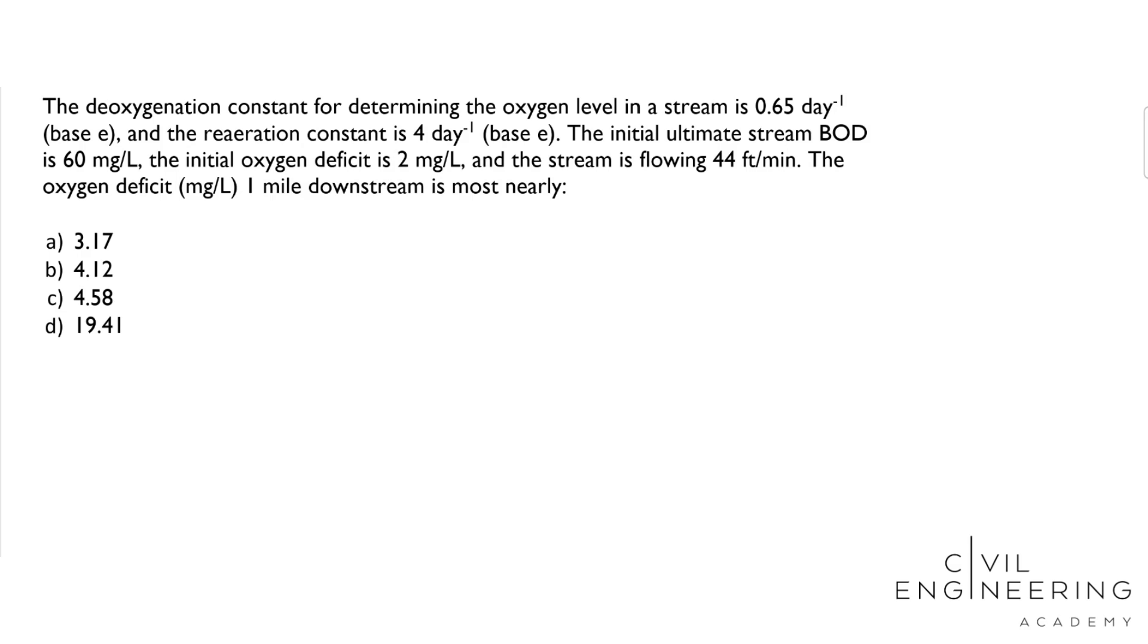Specifically about oxygen deficit in a stream. The problem statement says the deoxygenation constant for determining the oxygen level in a stream is 0.65 days to the negative 1 base e, and the reaeration constant is 4 days to the negative 1 base e. The initial ultimate stream BOD is 60 mg per liter.